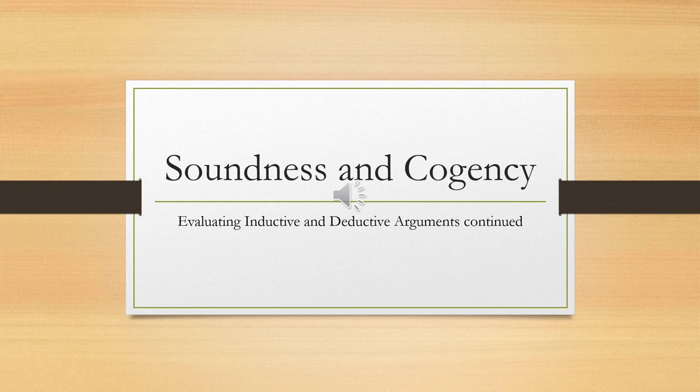In this lecture, we're going to look at two concepts: soundness and cogency, which will bring our discussion of the concepts required for evaluating arguments to a completion. Soundness is a property of some deductively valid arguments, and cogency is a property of some inductively strong arguments, so the ideas of soundness and cogency add to what we've already learned.